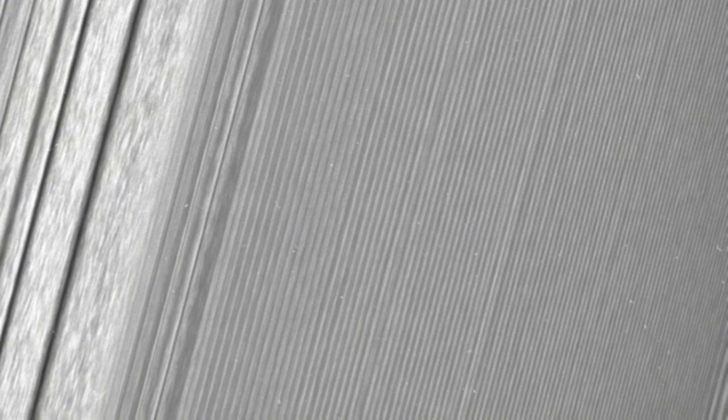Running low on fuel, Cassini will make 22 trips through the 2,400-kilometre ring gap just above Saturn from April 26 until September 15, when the spacecraft will make a final destructive plunge into the planet, transmitting data on its atmosphere until the signal is lost.